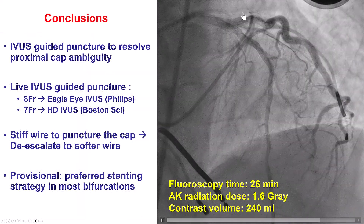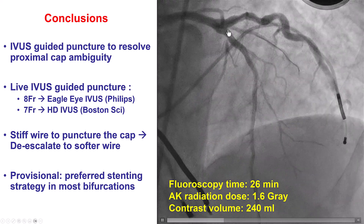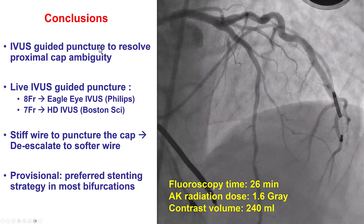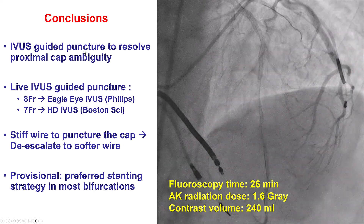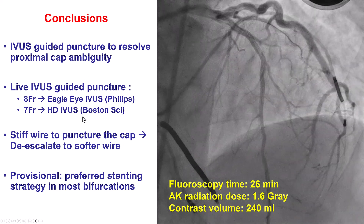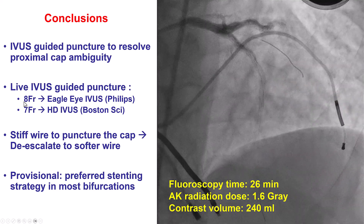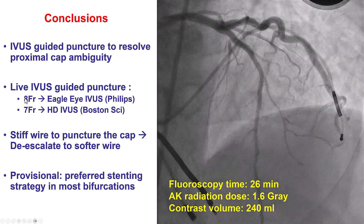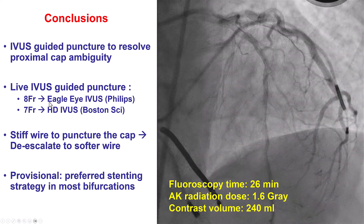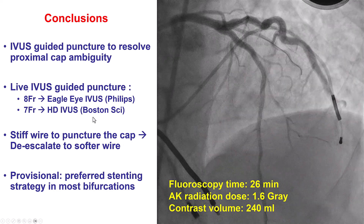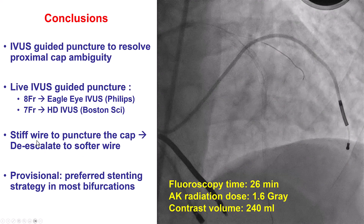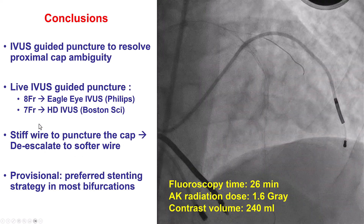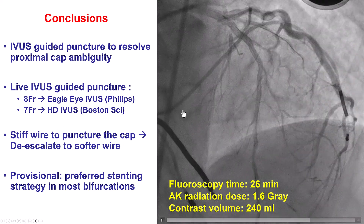In summary, this is an illustration of how IVUS can help resolve proximal cap ambiguity, especially in cases with no significant calcium at the proximal cap. You need a large guide for this — ideally 8 French, but 7 French will suffice, especially for the HD IVUS. Sometimes through a launcher we can still perform the procedure with 7 French simultaneously with the IVUS and a smaller microcatheter. When it comes to puncturing the cap, we typically use a moderate stiffness wire such as a Gaia Next 2, as used in our case.